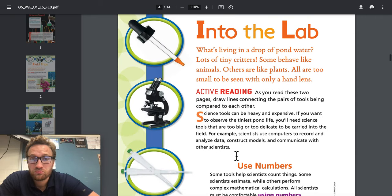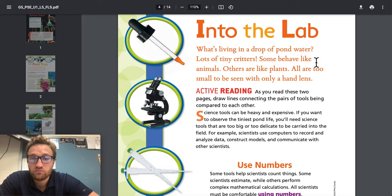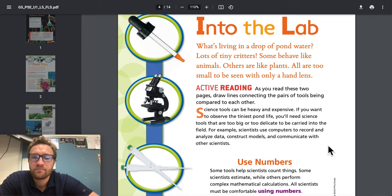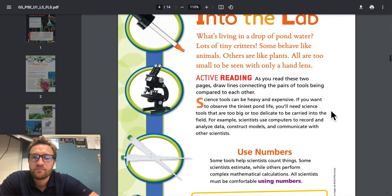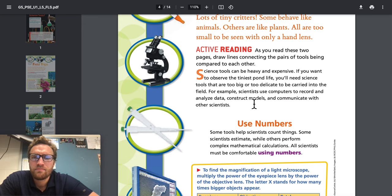Into the lab. What's living in a drop of pond water? Lots of tiny critters. Some behave like animals. Others are like plants. All are too small to be seen with only a hand lens. As you read these two pages, draw lines connecting the pairs of tools being compared to each other. Science tools can be heavy and expensive. If you want to observe the tiniest pond life, you'll need science tools that are too big or too delicate to be carried into the field. Scientists use computers to record and analyze data, construct models, and communicate with other scientists.